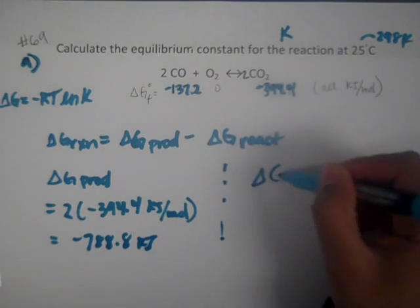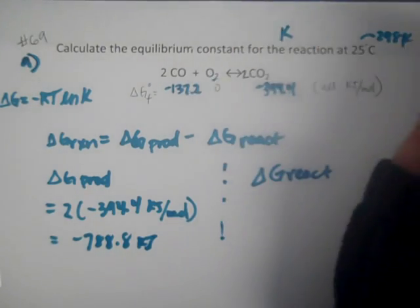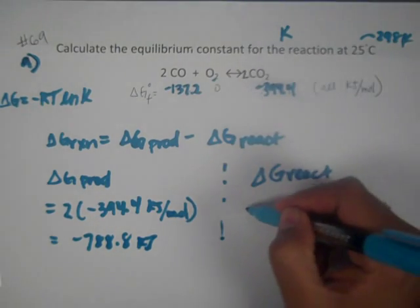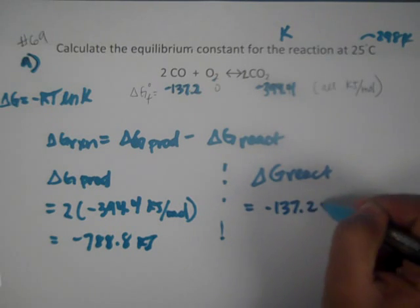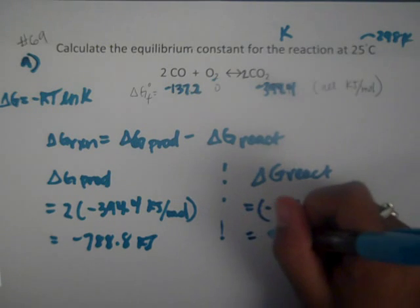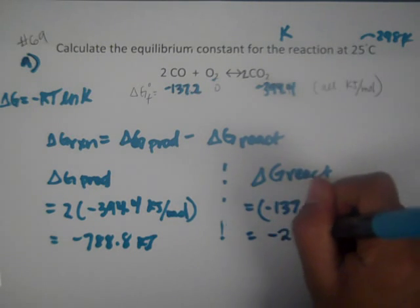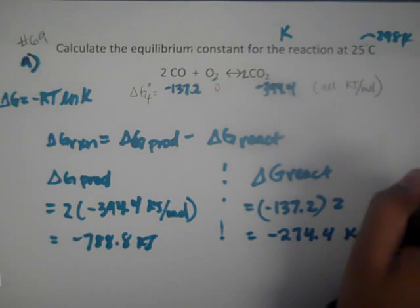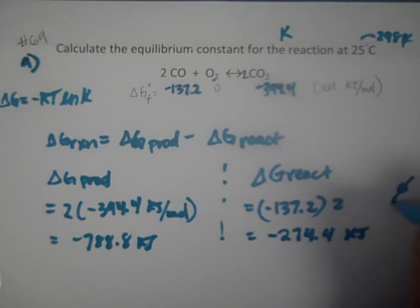Now delta G of reactants: we already know O2 doesn't contribute, so we just have negative 137.2 times 2, which gives us negative 274.4 kilojoules. O2 contributes zero.